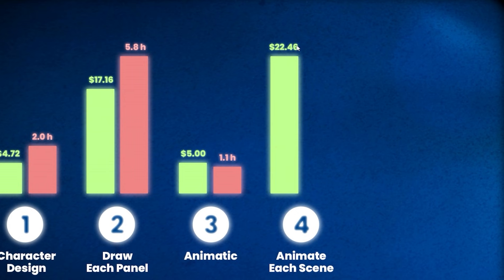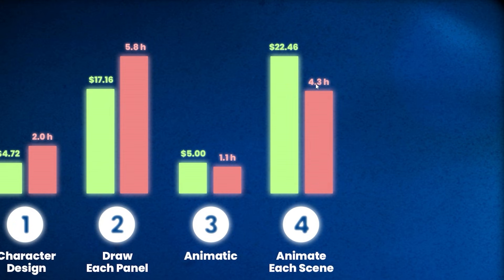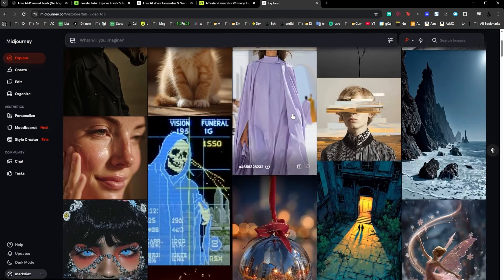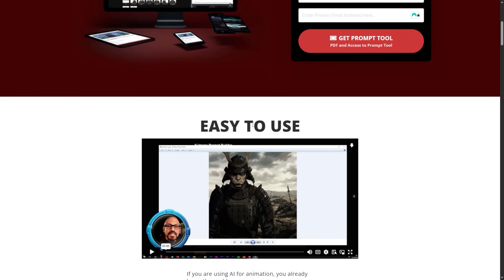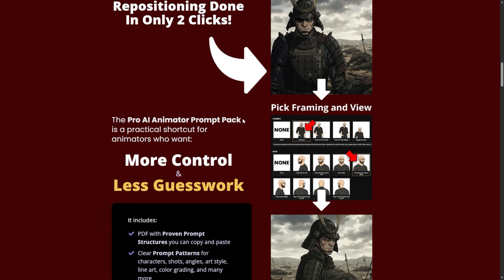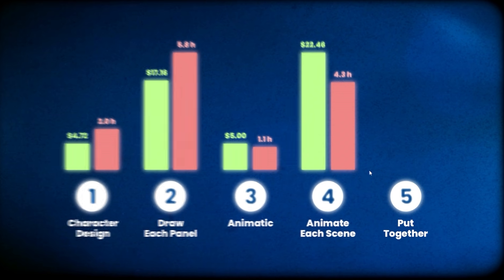Step four cost $22 because I did a lot of testing between tools — realistically it's probably closer to $10. It also took 4.3 hours, which will be less next time without all the testing. If you find prompting and choosing the right AI tools overwhelming, I put together the Pro AI Animator Prompt Pack that you can get for free using the link below. It gives you organized copy-paste prompts for every stage of the process to produce your animation following these five steps.